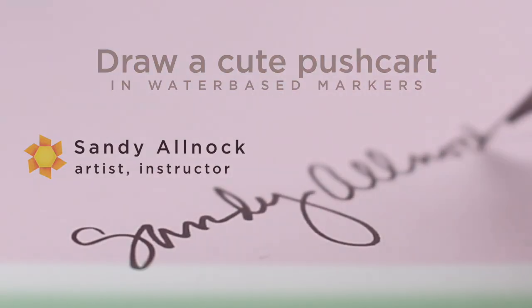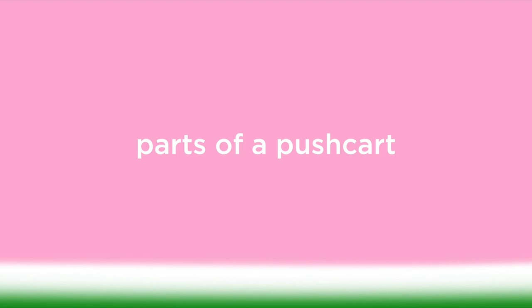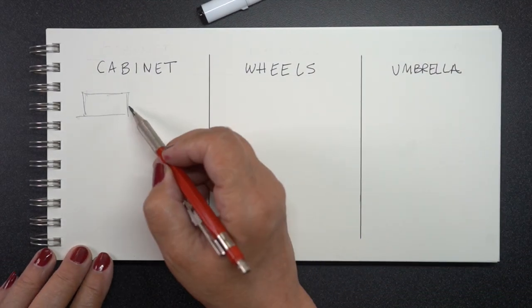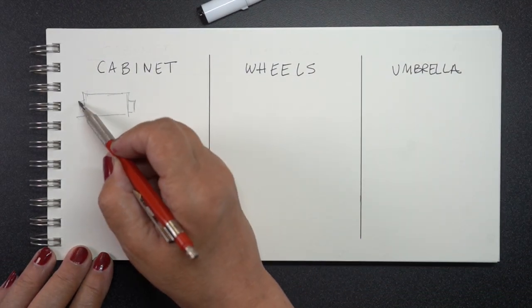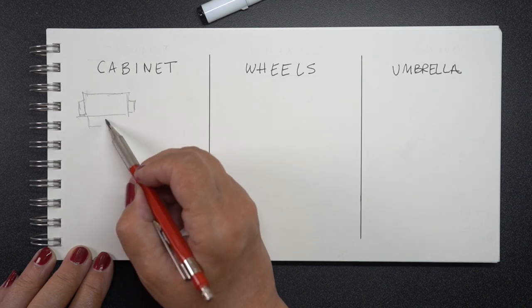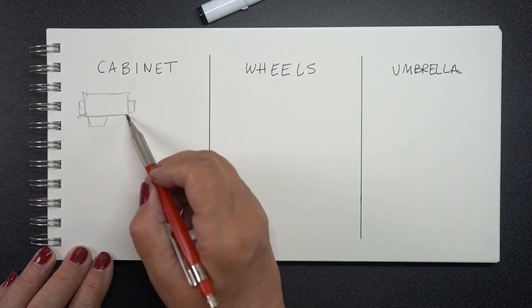This is a belated part two of my watermelon series of two videos, so you can look two videos back to find the first one, which was a doodled watermelon. A push cart, whatever you're going to put in it, has a bunch of different components: Cabinet, wheels, and umbrella.